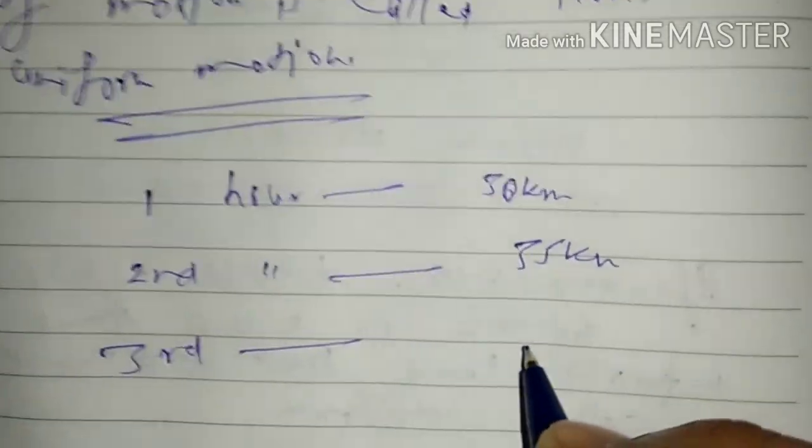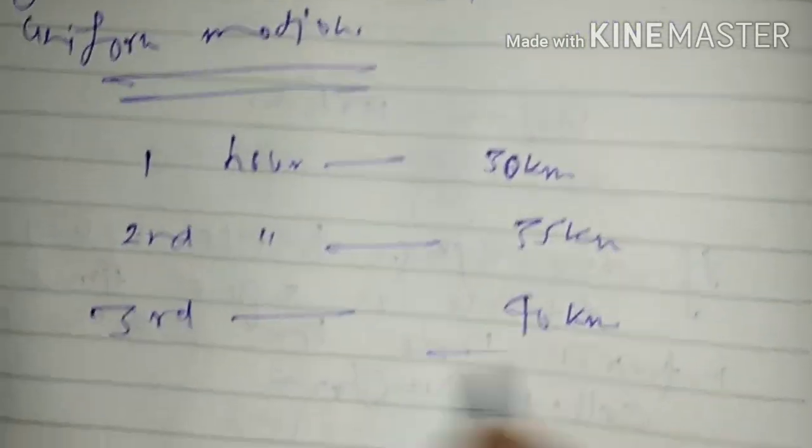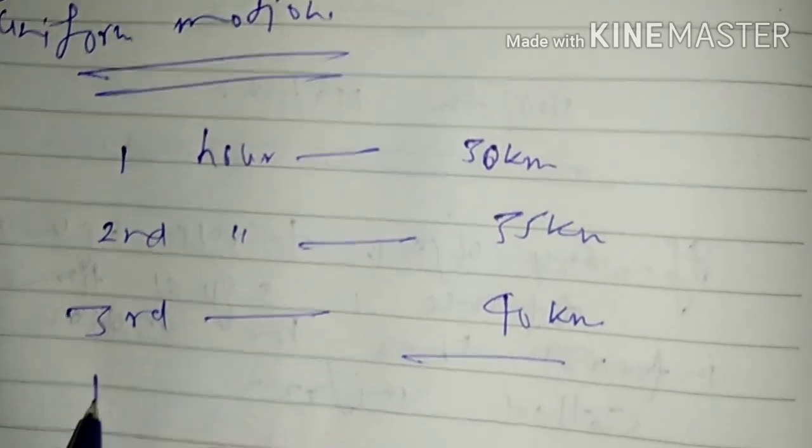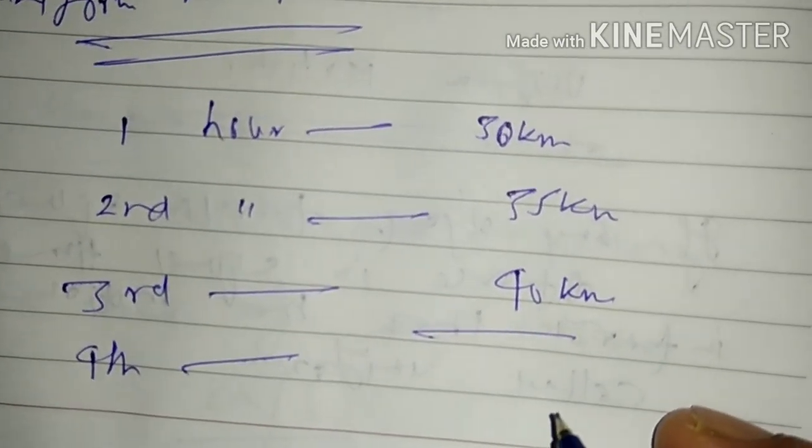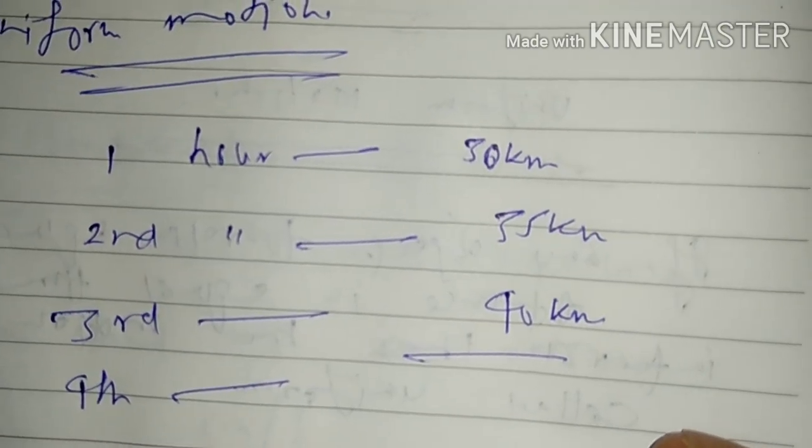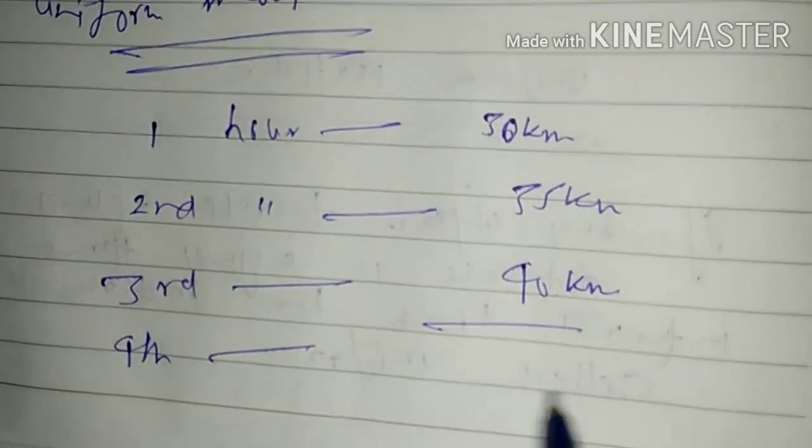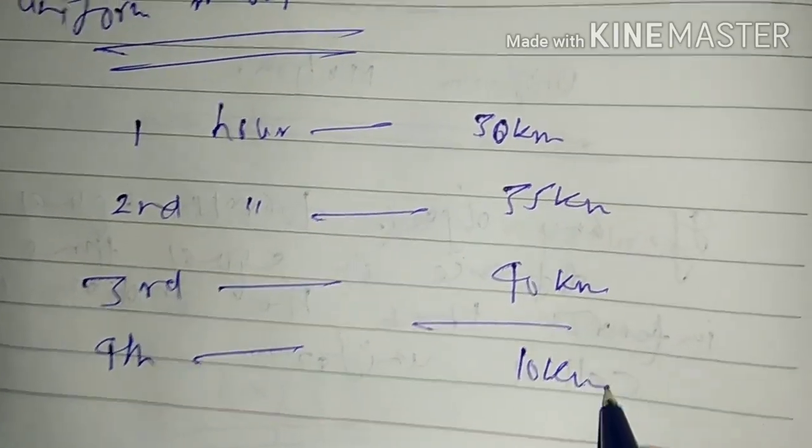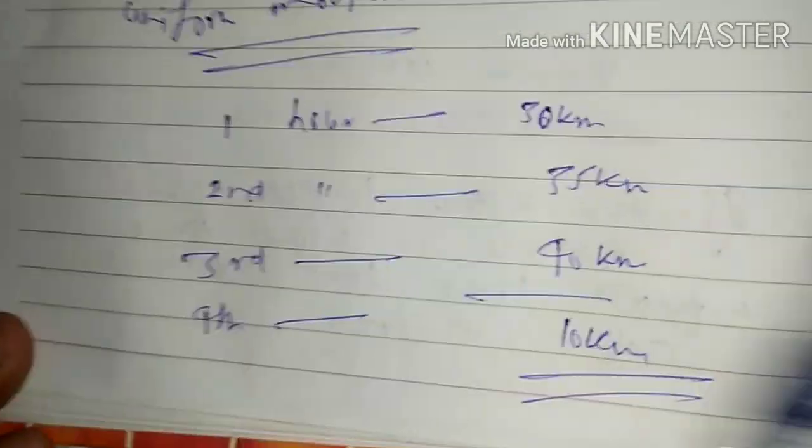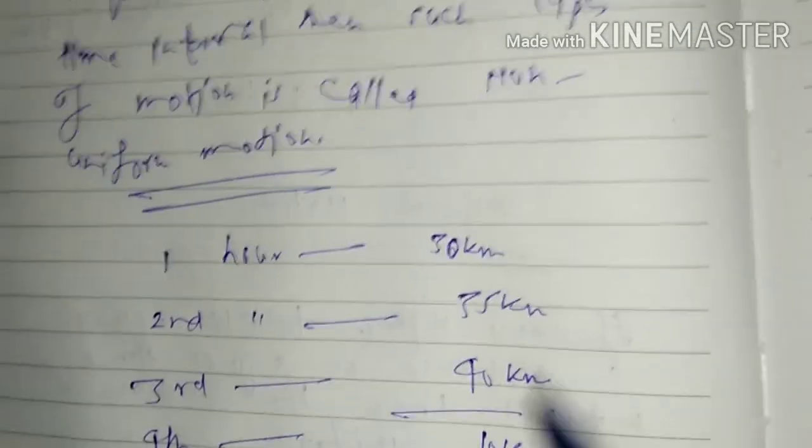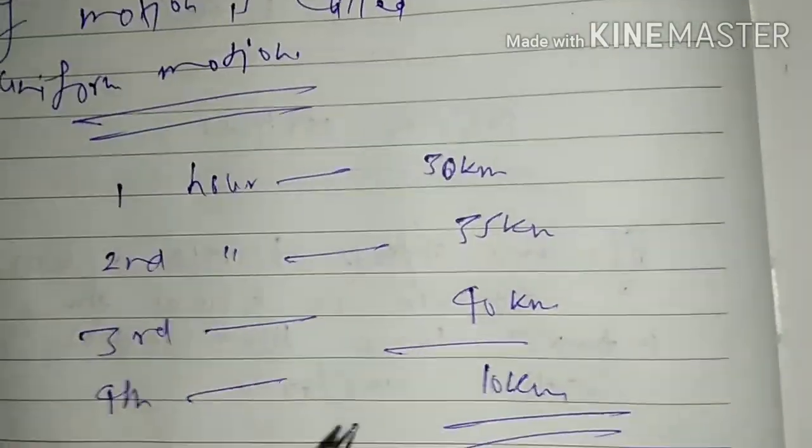But now there is a traffic jam, and in fourth hour the vehicle moves very slow and the distance traveled is only 10 kilometers. So what we see? We see that in equal time intervals the distance traveled is not equal, so such types of motion is called non-uniform motion.